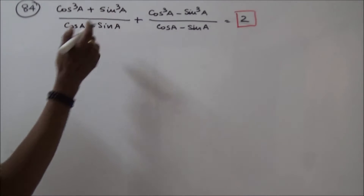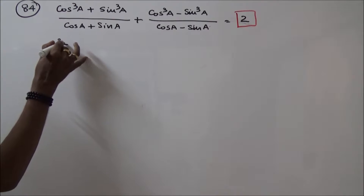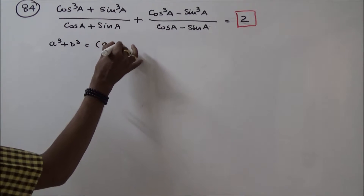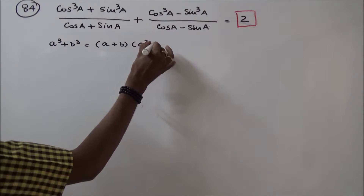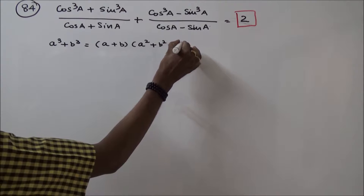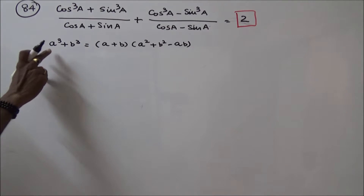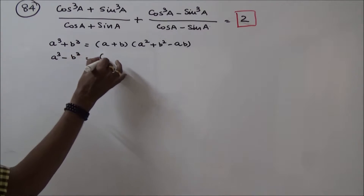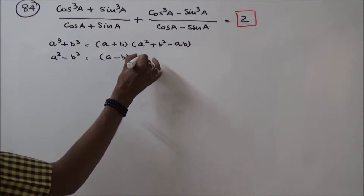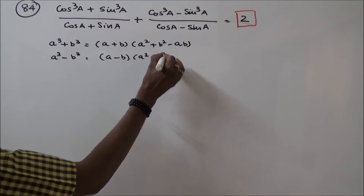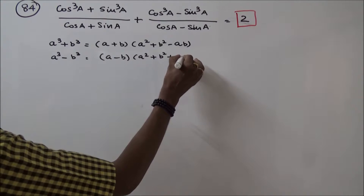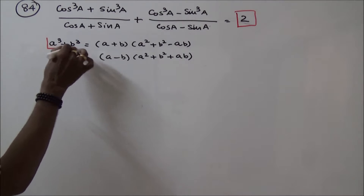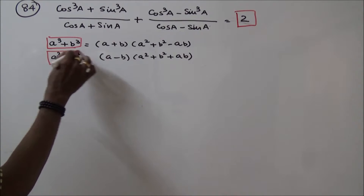We need to know two formulas. a³ plus b³ is equal to (a plus b)(a² plus b² minus ab). And a³ minus b³ is equal to (a minus b)(a² plus b² plus ab). These are very important formulas.